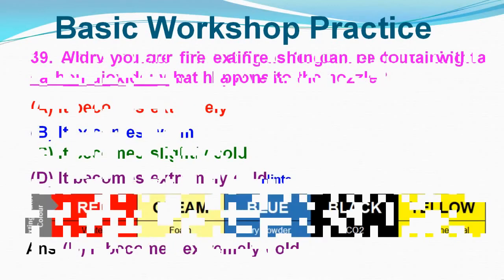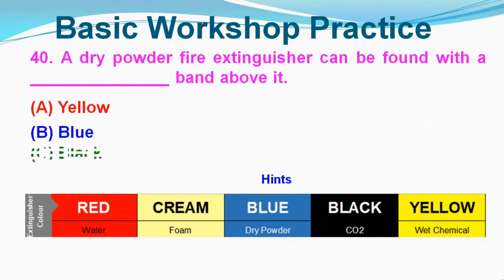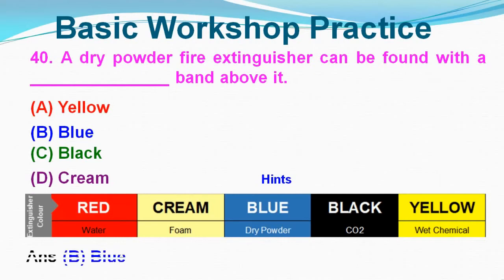Question No. 40: A dry powder fire extinguisher can be found with which colored band above it? Option A: Yellow, Option B: Blue, Option C: Black, Option D: Cream. Correct answer is Option B, Blue.